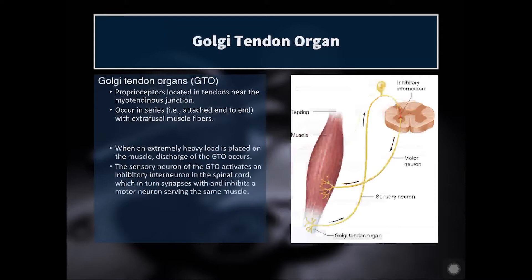The next proprioceptive organ is the Golgi tendon organ, or GTO. These are located near the myotendinous junction in the muscle tendon. They occur in series, meaning they're attached end-to-end with the extrafusal fibers. When extremely heavy loads are placed on the muscle, GTOs are activated and send a signal back to the spinal cord that actually inhibits the alpha motor neuron, telling it to stop sending a signal to the muscle. So if your muscle encounters a brief sharp stretch it can handle, the muscle spindles activate a stretch reflex. But if the GTO is activated by a very strong, sustained muscle force, it causes the muscle to relax to prevent catastrophic damage — your body would rather drop the weight than risk tearing the tendon at the insertion point.